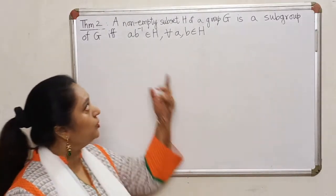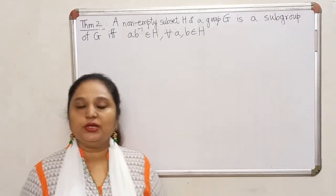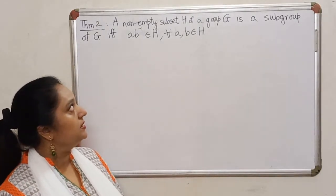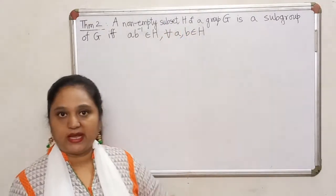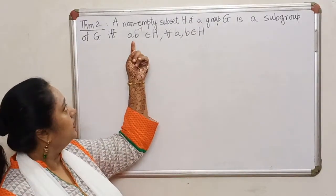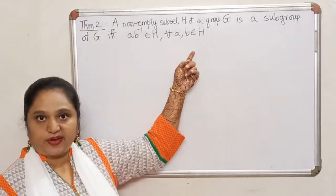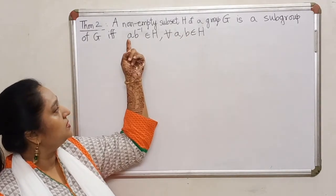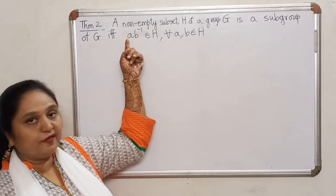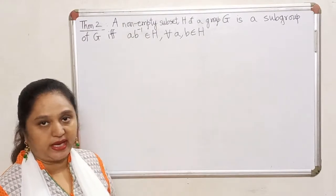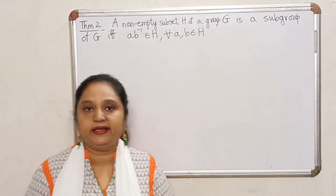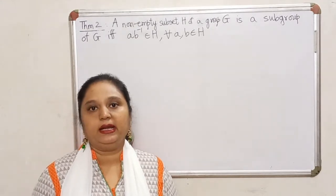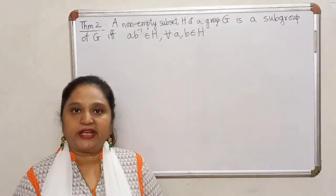But if you are using Theorem 2, then you need to verify only two conditions. One is that identity has to lie inside H, and this condition has to be satisfied: for any two elements A and B of H, the combination A into the inverse of B should again lie inside H. This property is a combination of the closure property and the inverse property.